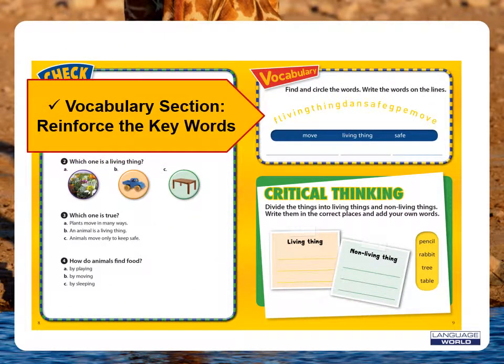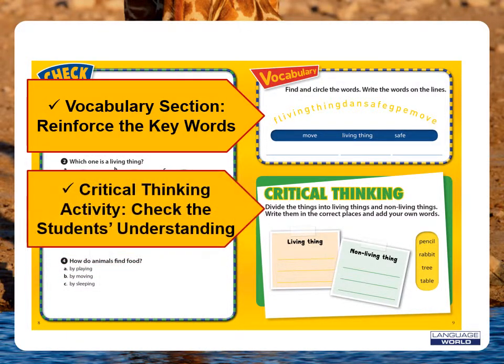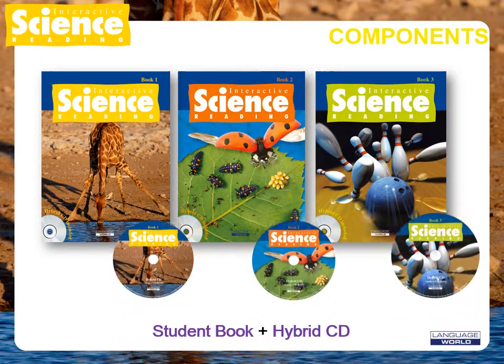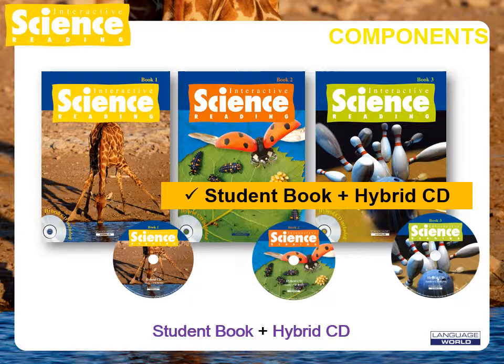The vocabulary section is designed to reinforce the keywords from the unit in a fun and engaging way. Students will be asked to complete various exercises including drawing, filling in the term, circling, or matching. Activities in critical thinking are designed to check students' understanding of the information and serve as an extension of the unit to add depth to lesson concepts. Interactive Science Reading includes a student book and hybrid CD audio plus CD-ROM in three levels.